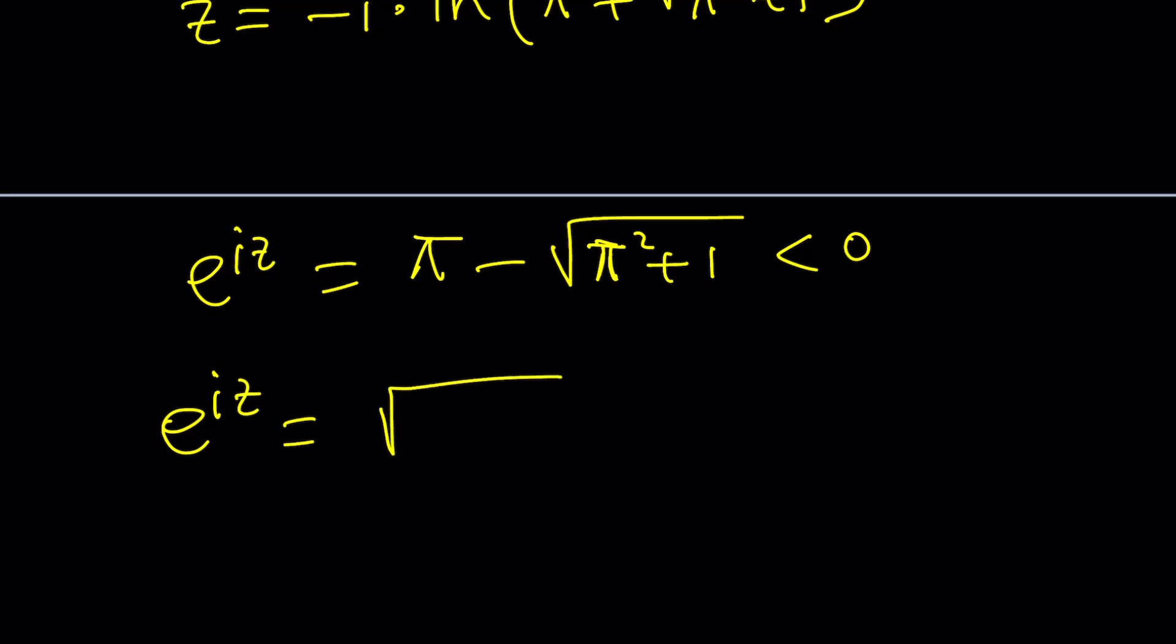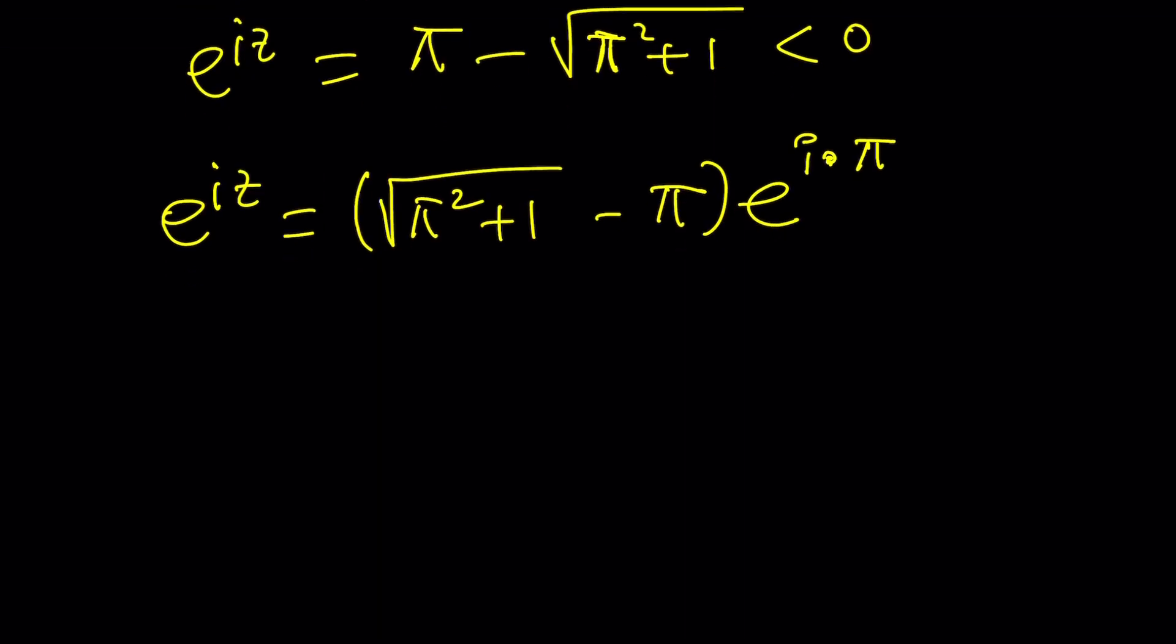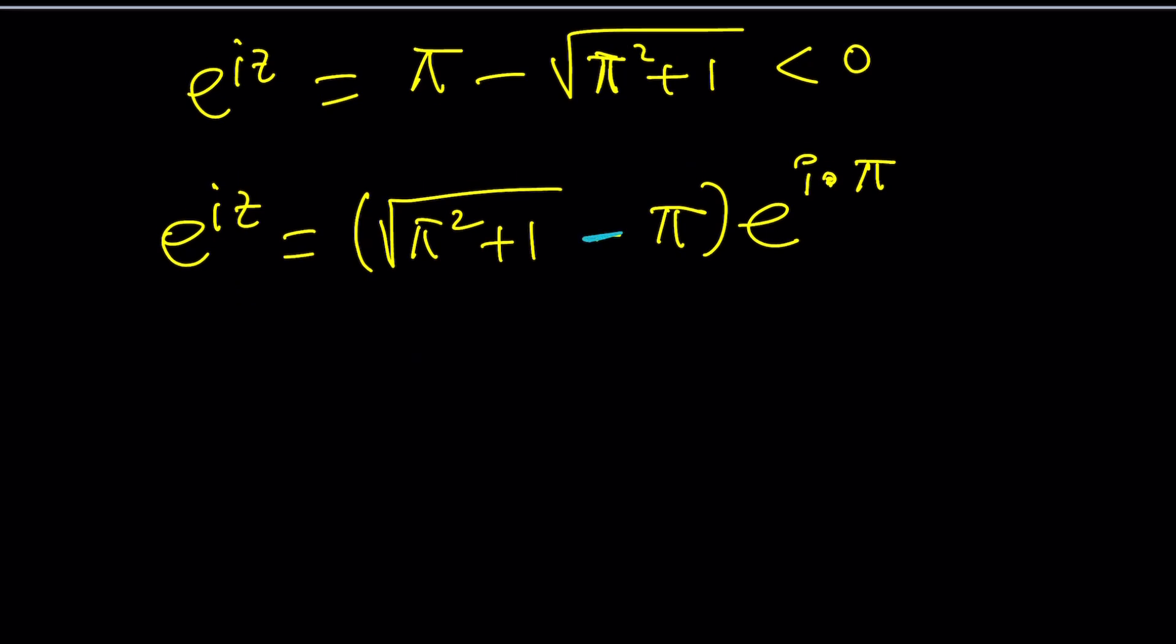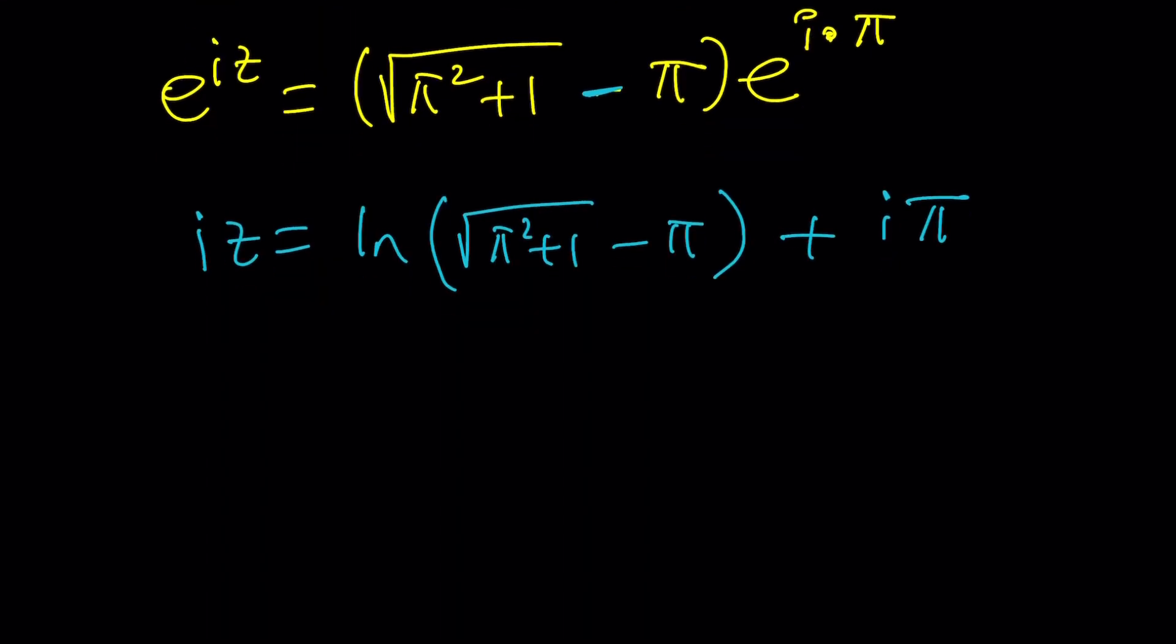We can write it like this: E to the iz can be written as the modulus of this times e to the power i times pi. Let's keep it simple. And then when you do the natural logs, you're going to have a real valued natural log here because this is going to be a positive quantity, and then plus you're going to get i pi. When you multiply finally by negative i, you're going to get this. Negative i squared gives you a 1, so it's going to be pi minus i times ln square root of pi squared plus 1 minus pi, which gives you the cosine of cosine of z equals negative 1.